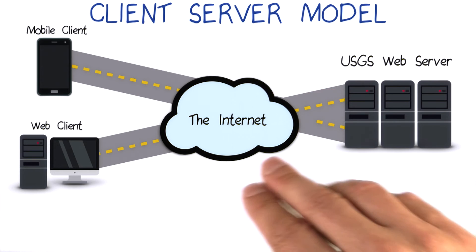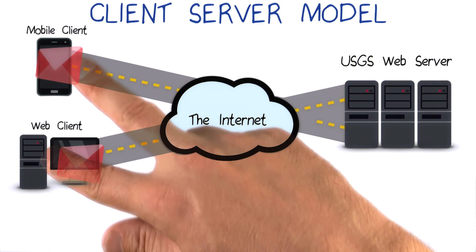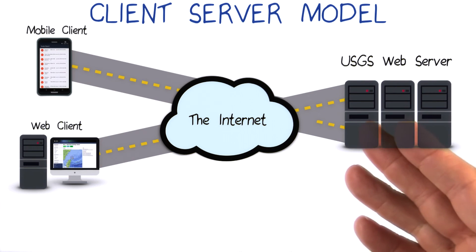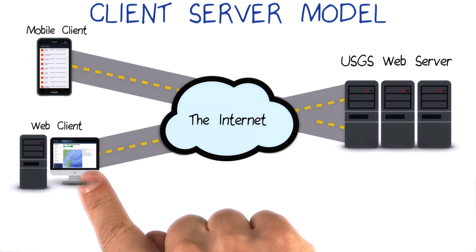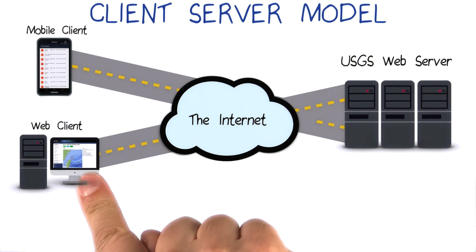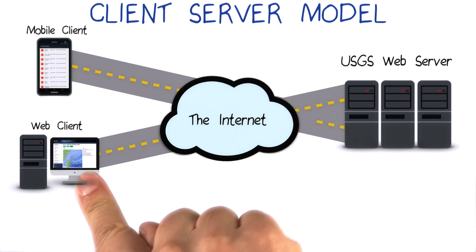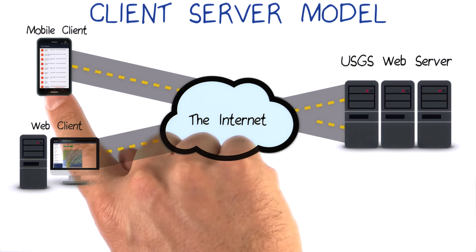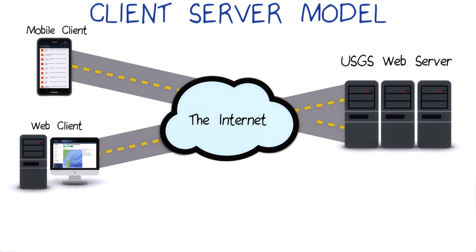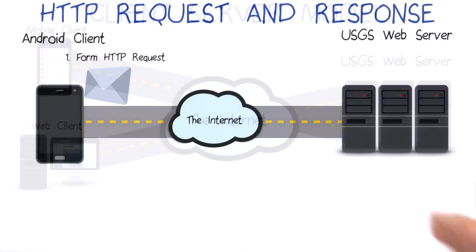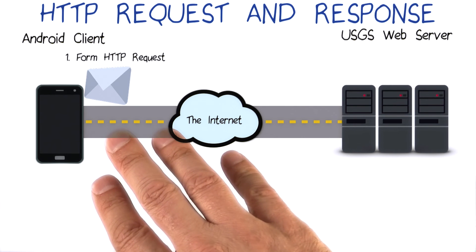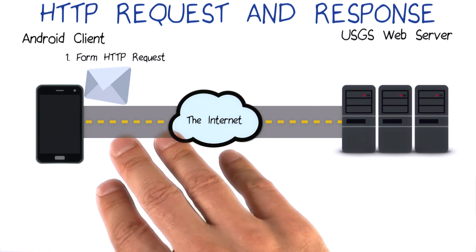Once the clients receive the response from the server, they control how the data gets displayed to the users. For example, a web browser can render a web page to the screen, or a mobile app can parse out the bits of data that it needs to show useful information on the device screen. In this lesson, we'll zoom in on the major steps of the data exchange process.